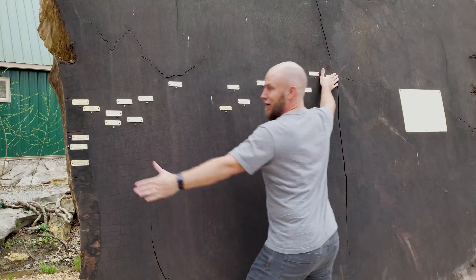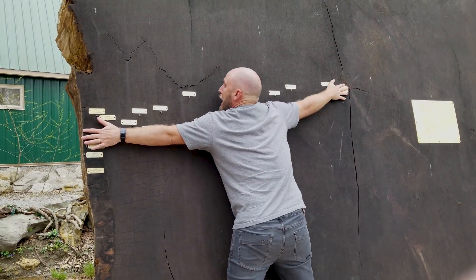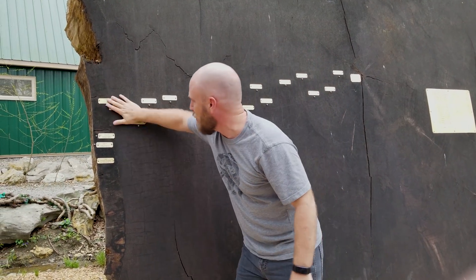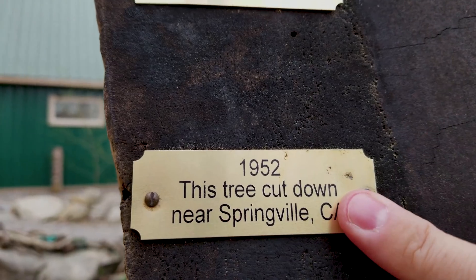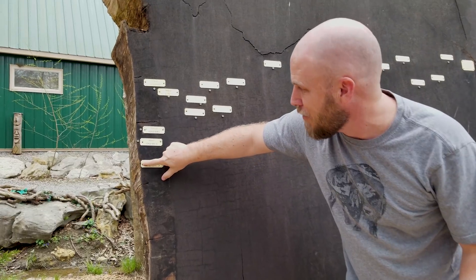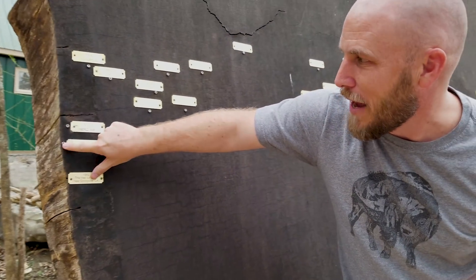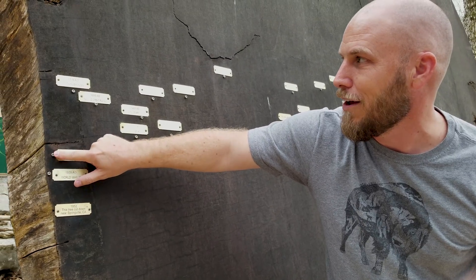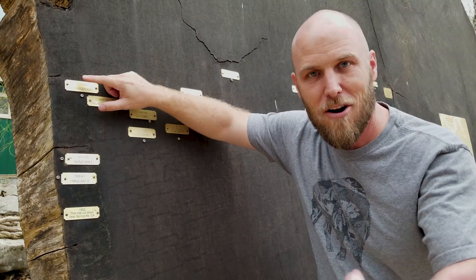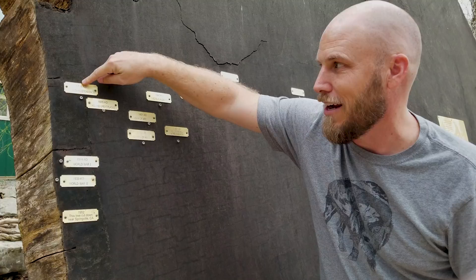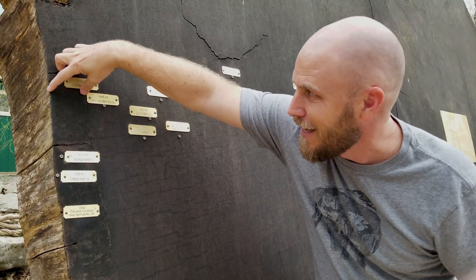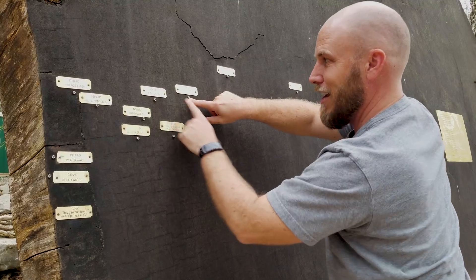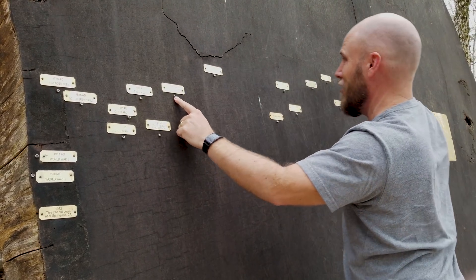So this is the middle of the tree, and that is the edge. They have these little plaques on here, and you can see it was cut down in 1952. If you go from that spot back to World War II, you can see it's like nothing. There's World War I, and then think about how long ago the American War for Independence seems in your brain — and that only gets you to here. If you want to go back to the Middle Ages and the Crusades, it's only that far on this whole tree.